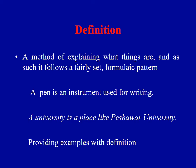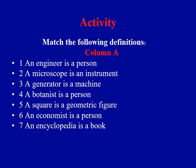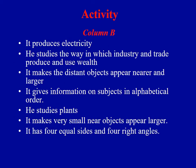Providing examples with definition — there is an activity based on definition. Match the following definitions: there are two columns, A and B, given across two slides. You will select a definition from column A — for example, 'An engineer is a person who...' — and match it with the correct description in column B. In this way you can get a definition of a person, an instrument, or a book.